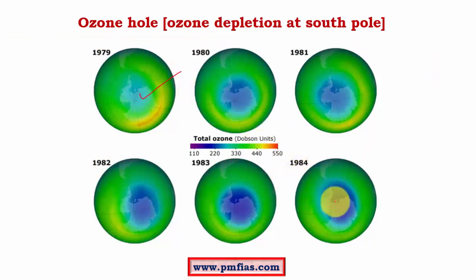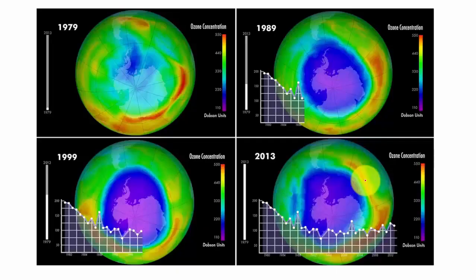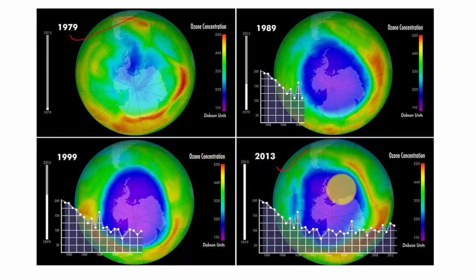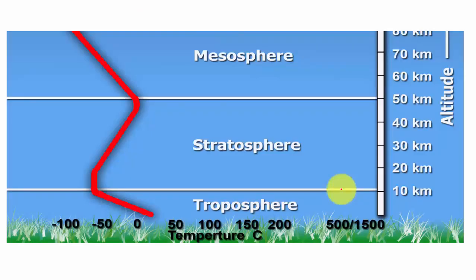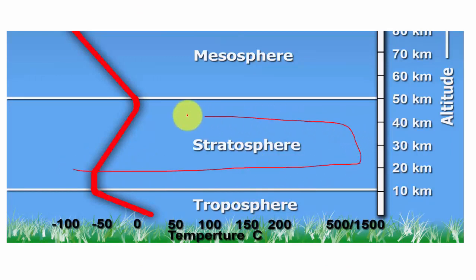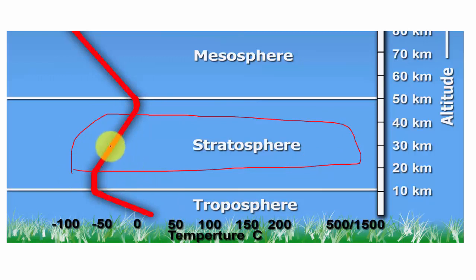We can see from 1979 to 1984 how severe the influence of chlorofluorocarbons was, and then from 1979 to 2013 we can observe the slow recovery of the ozone layer following the ban on CFC production and use as refrigerants. In the ozone layer within the stratosphere, ozone absorbs ultraviolet radiation — which is harmful to life on the surface — causing temperature to increase in that region.